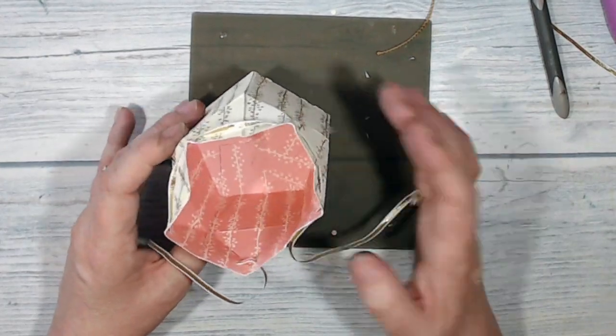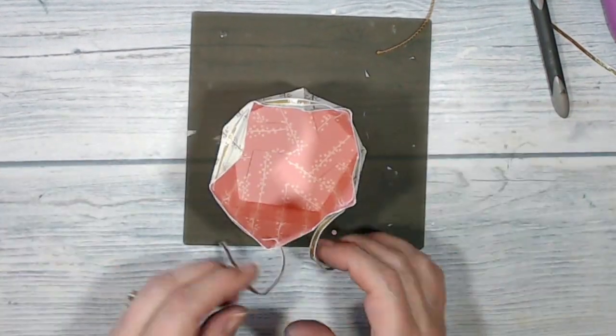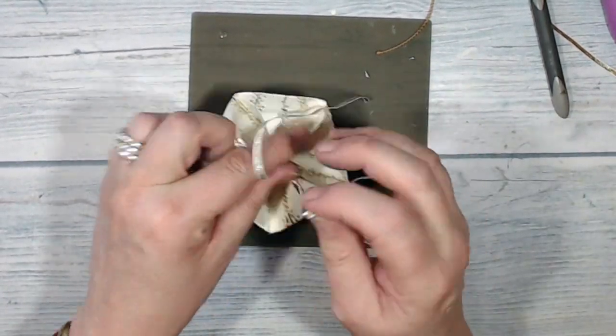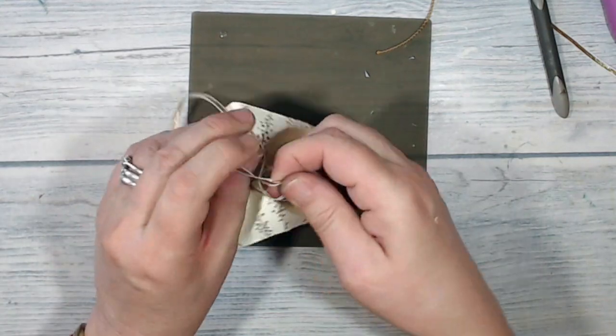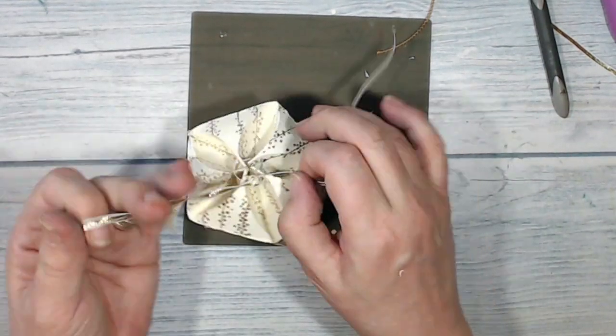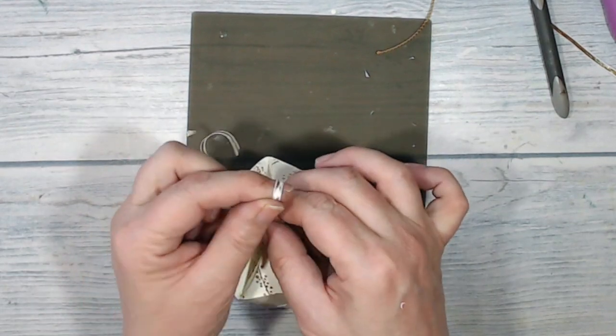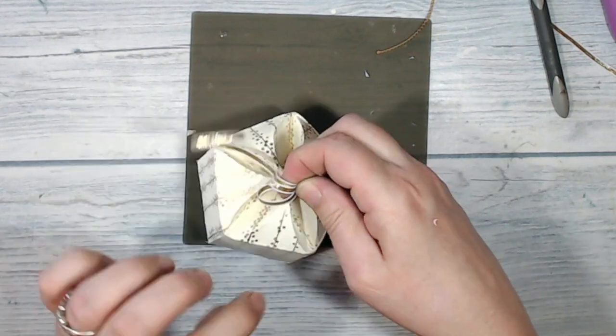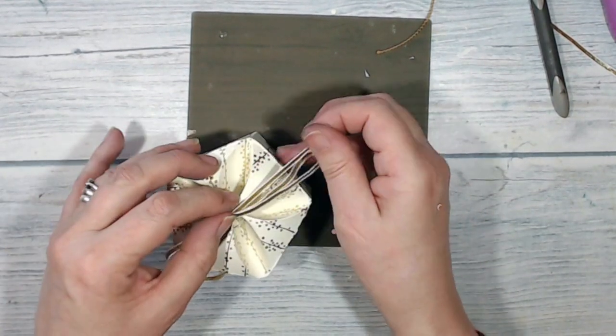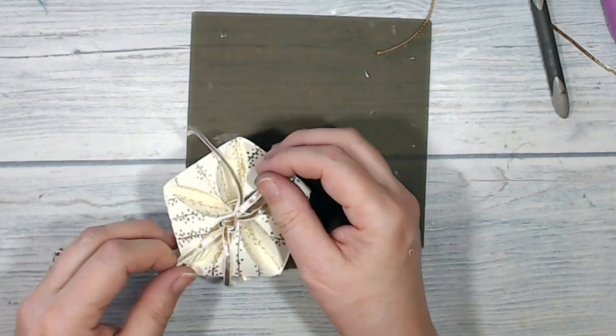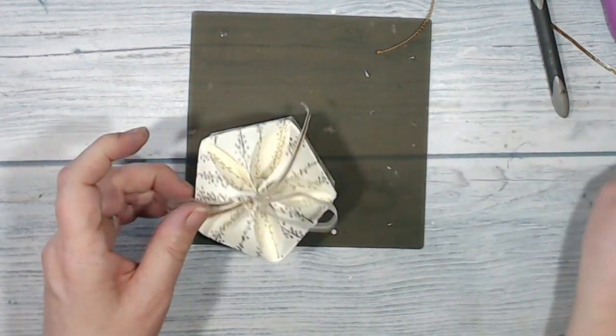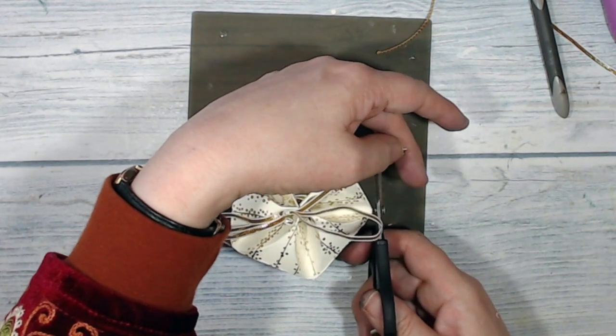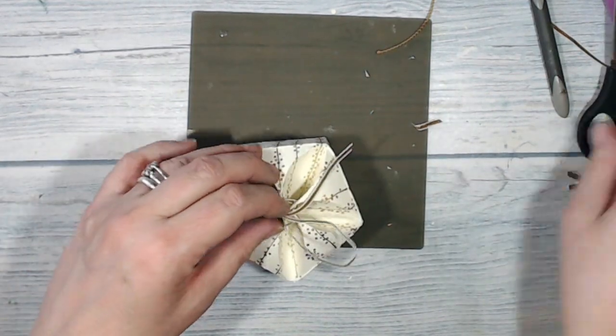With my ribbon threaded through, the next thing I would do would be to put my gift into my box, but then I can just pull on my ribbon strands here and just tie them off. I can trim the ends a little bit, but I don't want to do too much because I do want to have something to hold on to when I open my box.